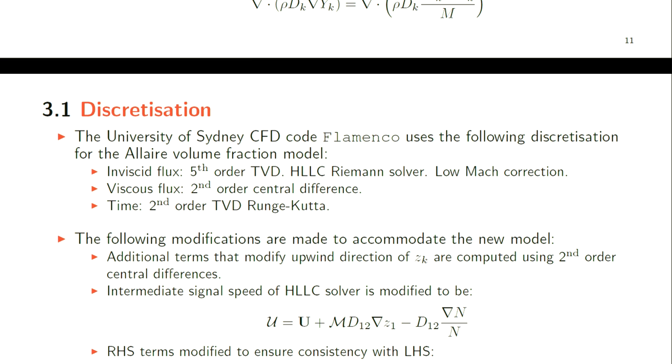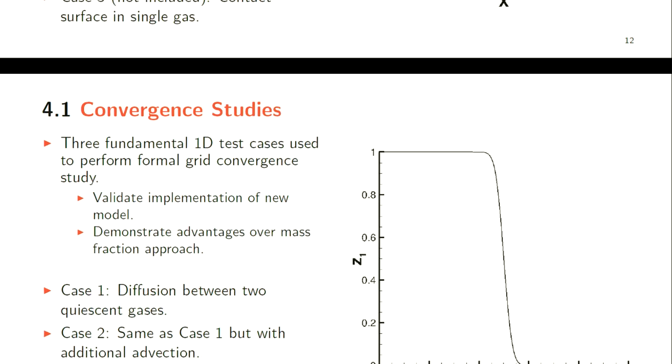We make the following modifications to accommodate the new model. The additional terms that modify the upwind direction of the volume fractions - all of these terms here - are computed using second-order central differences. We modified the intermediate signal speed of the Riemann solver just for the volume fraction. We also need to ensure the discretization is consistent with our assumptions, so we modified these right-hand side terms to be consistent. Under the assumption of pressure-temperature equilibrium, the mole fraction will equal the volume fraction. This ensures we've ensured consistency with the left-hand side terms because the diffusion coefficients here need to be the same as the ones in the inviscid flux discretization.